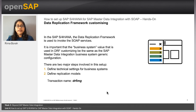Next, we move on to the data replication framework. In SAP S/4HANA, the data replication framework is used to invoke the SOAP services. It is important to note that the business system value used in DRF customizing should be the same as the SAP Master Data Integration business system value in the generic configuration setup. In DRF, there are two major setup steps: first is defining the technical settings for business system, and second is defining the replication model. The transaction name in SAP S/4HANA to initiate DRF is DRF IMG.